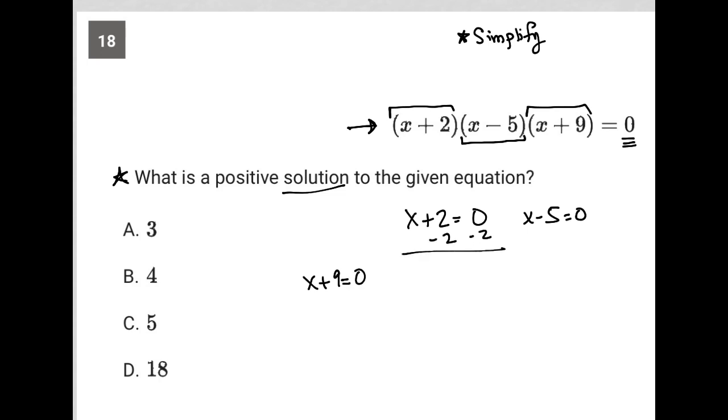Now, if we follow this through, we'll see that here we get an X equals negative two. Here we get an X equals five. And here we get an X equals negative nine.